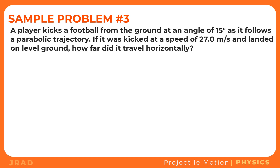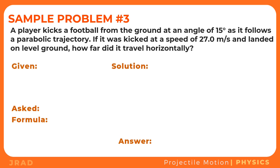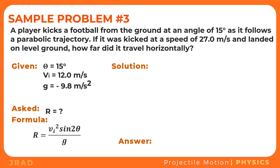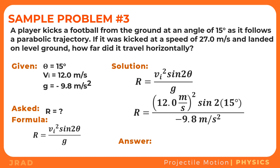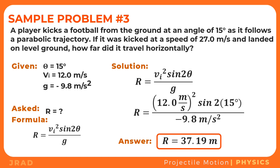Now let's solve a problem involving a projectile launched at an angle. A player kicks a football from the ground at an angle of 15 degrees following a parabolic trajectory. It was kicked at a speed of 27 meters per second and landed on level ground — how far did it travel horizontally? Using the GRESA method, the given values are θ equals 15°, vi equals 27 m/s, and g equals negative 9.8 m/s². Substituting into R equals vi²·sin2θ over g gives R equals 37.19 meters. The football traveled 37.19 meters horizontally from where it was kicked.